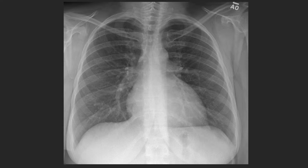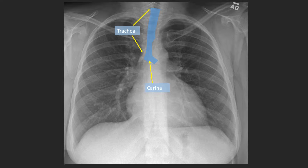This is a normal frontal view of the chest. The airways are air-filled and therefore will appear black. The first structure we have to talk about is the trachea, which is seen here extending from the neck into the mediastinum. The inverted V-shaped portion where the trachea divides into the right and left main stem bronchi is known as the carina, which is seen here.